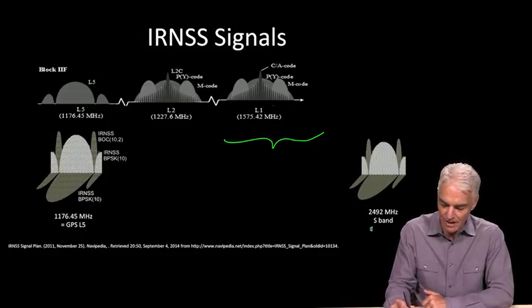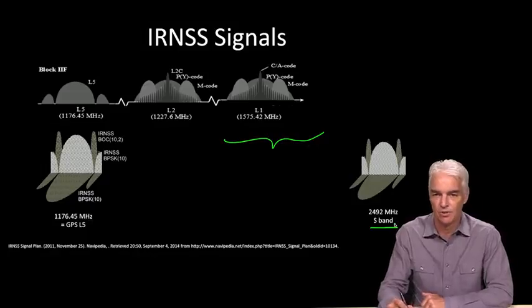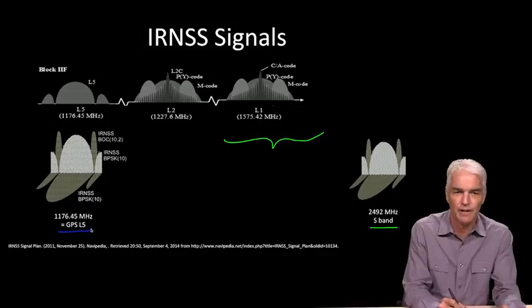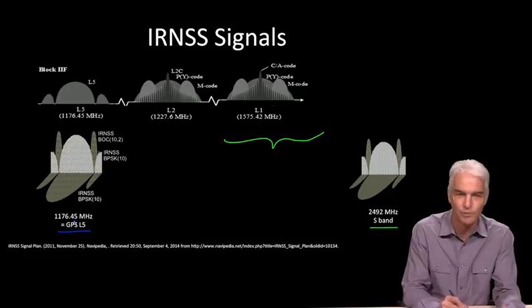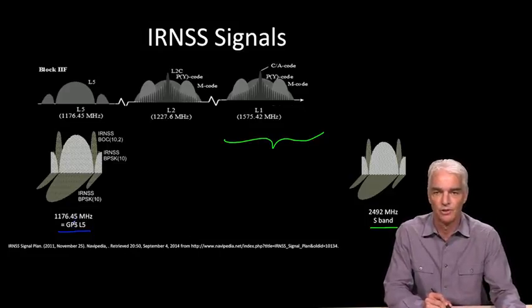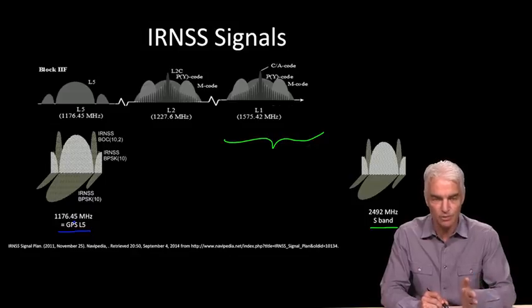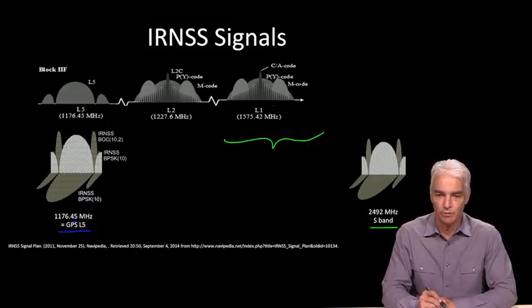IRNSS has nothing there. And it has a transmission right out in S-band at about 2.5 GHz, 2,024-92 MHz out here. But then it does have a signal on L5 and the same L5 frequency as GPS. So to use IRNSS with GPS, compatibly with GPS, you would use the L5 frequency.